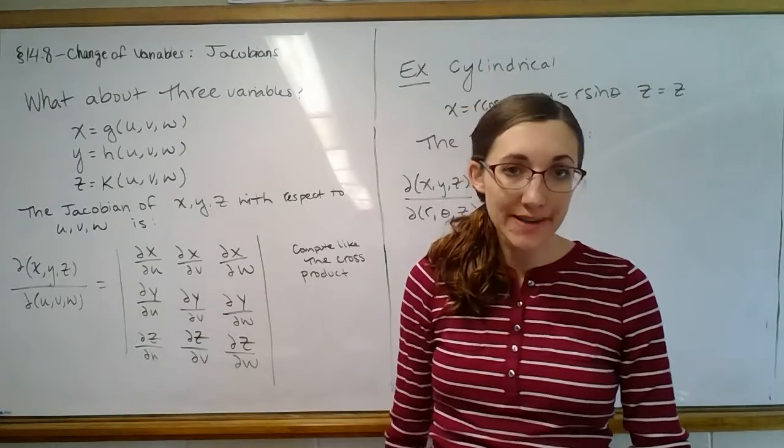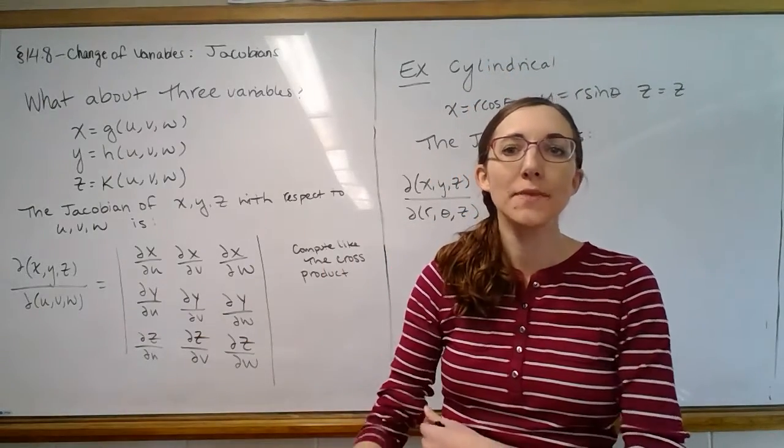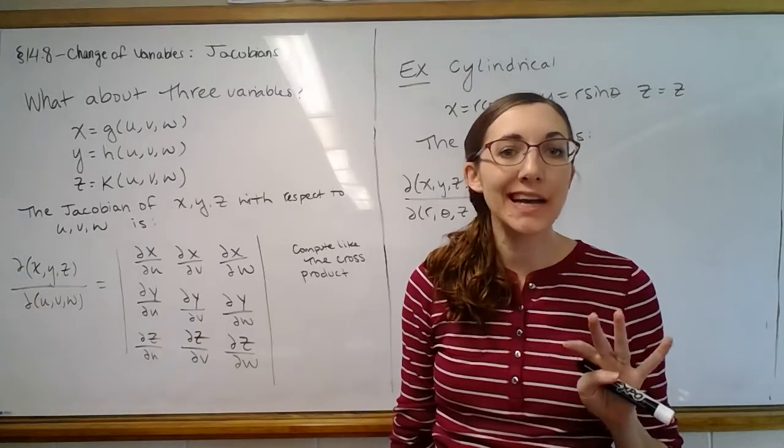Okay, so what if we have three variables? How do we find a Jacobian? So if we have x, y, and z,